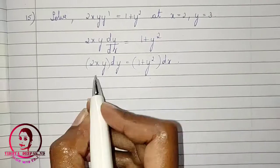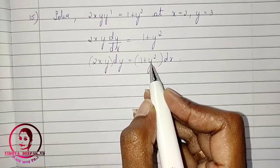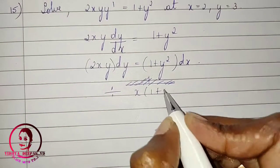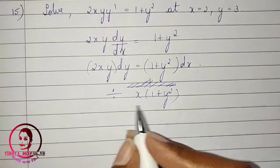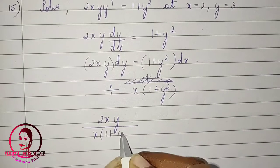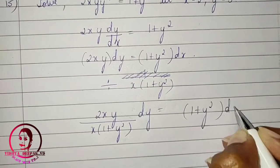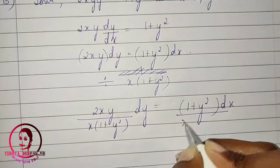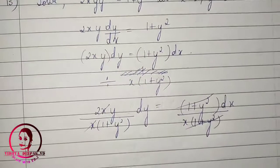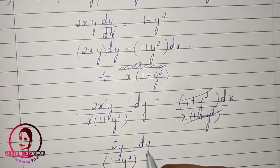Now we bring all x terms with dx and y terms with dy. Divide the equation by x·(1 + y²). So 2xy divided by x·(1 + y²) times dy equals (1 + y²)·dx divided by x·(1 + y²). The (1 + y²) cancels and x cancels, leaving 2y/(1 + y²)·dy = (1/x)·dx.